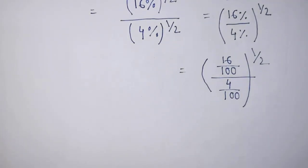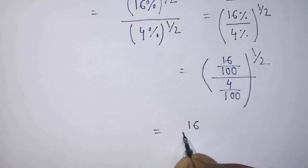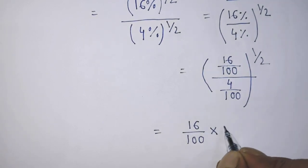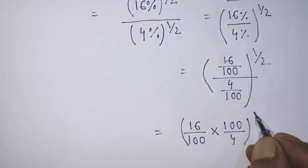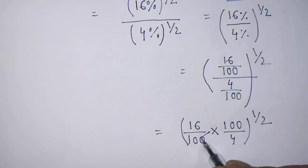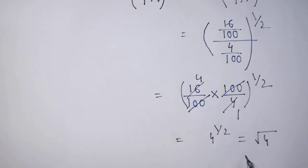After that, it will be 16 over 100 times 100 over 4 whole to the power 1 over 2. 100 cancels, 4 goes into 16 four times, so it will be 4 to the power 1 over 2. Square root of 4 will be plus minus 2.